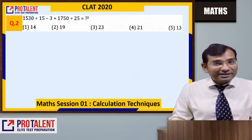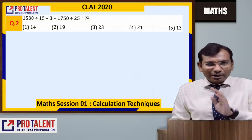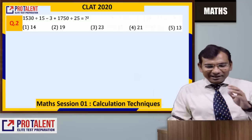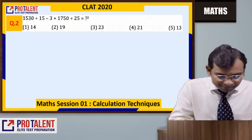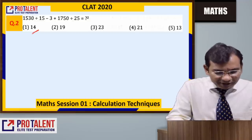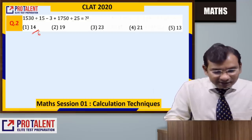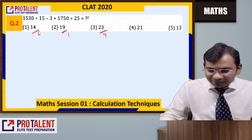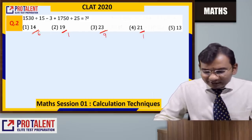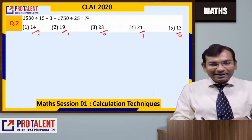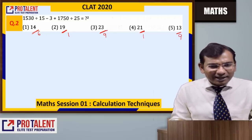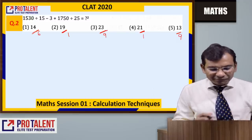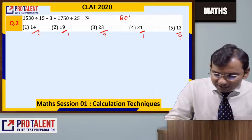Question two: 1530 divided by 15 minus 3 plus something is equal to something squared. This is interesting. Think about unit digits of squares — 4 squared gives unit digit 6, 9 squared gives unit digit 1, 3 squared gives unit digit 9, 1 squared gives unit digit 1. If the answer is 9 or 1 in unit digit, that creates some ambiguity.